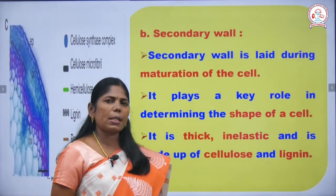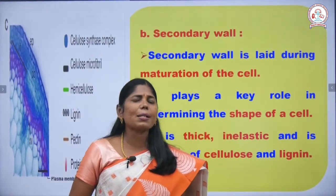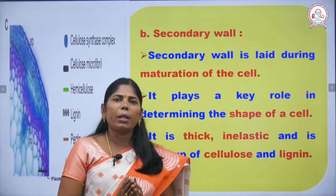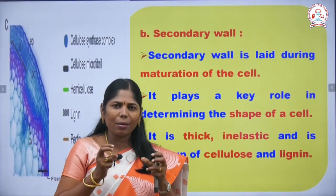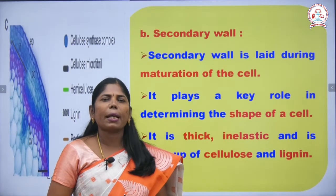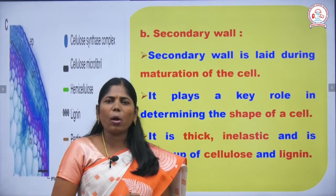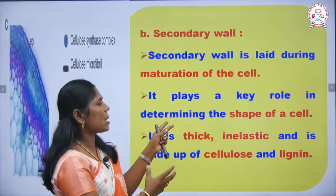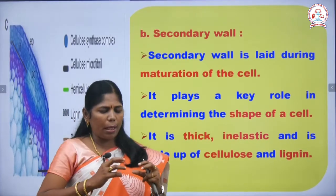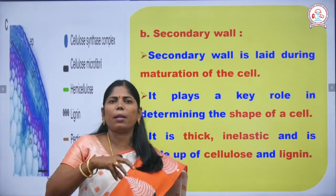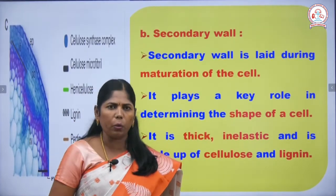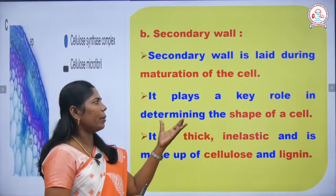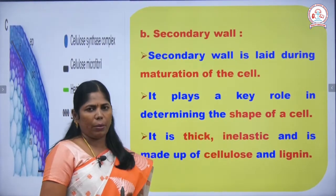Next, we are going to see the secondary wall. The secondary wall is present next to the primary wall — it is a very thick layer. The secondary wall is formed during the maturation of the cell and plays a key role in determining the shape of the cell.